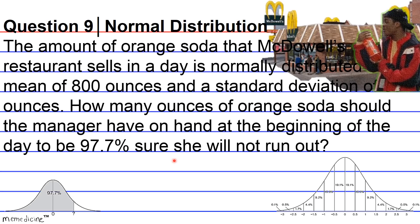We have that 800 ounces is the mean located at the center of our normal distribution. And in order not to run out of orange soda, sales for the day must be less than what is on hand at the beginning of the day. So let me specify what I mean by that. The manager must find the value on the normal distribution curve where the sum of percentages to the left is 97.7%, or the lower bound confidence interval.